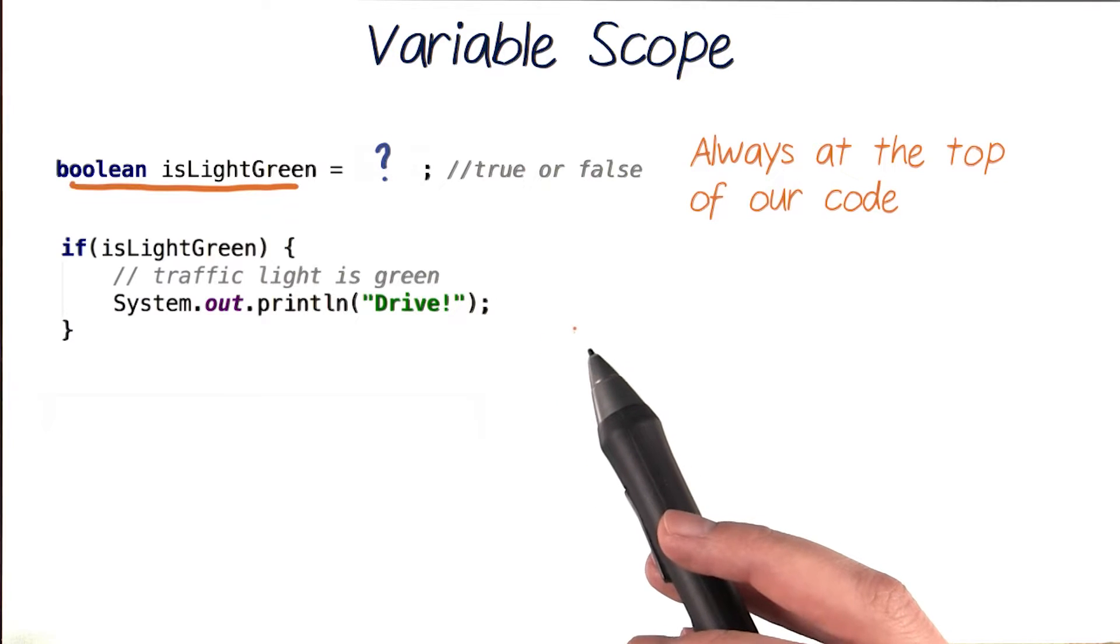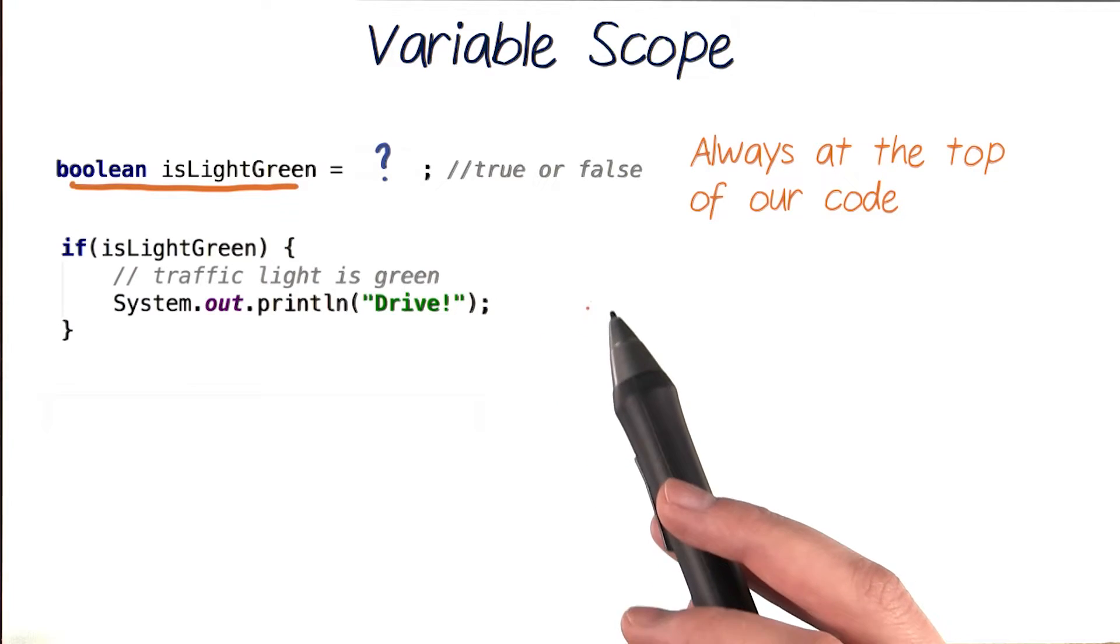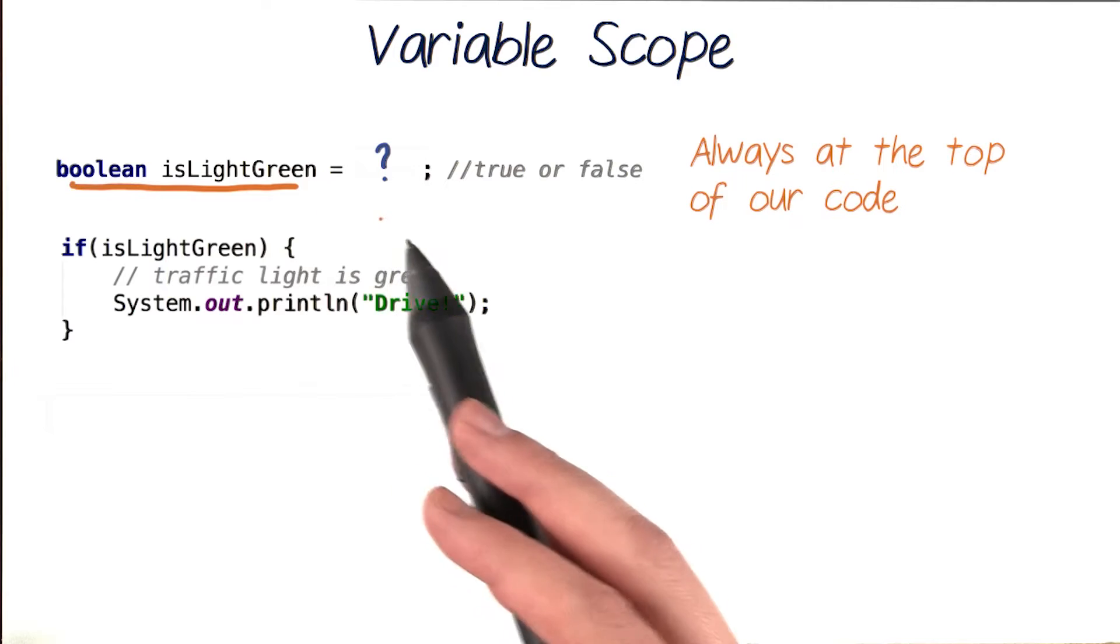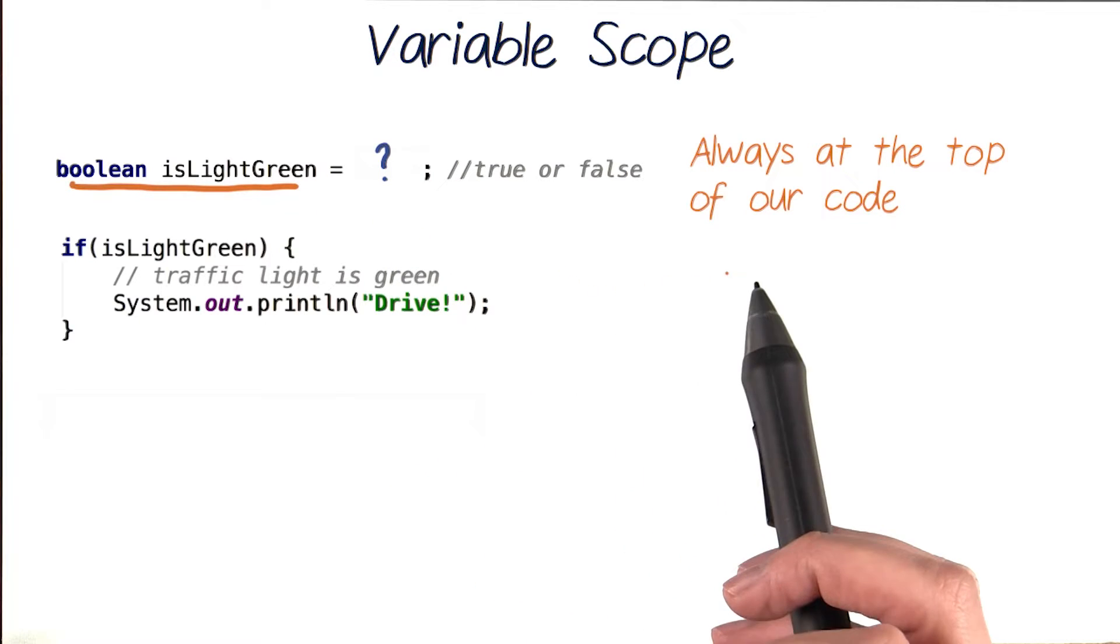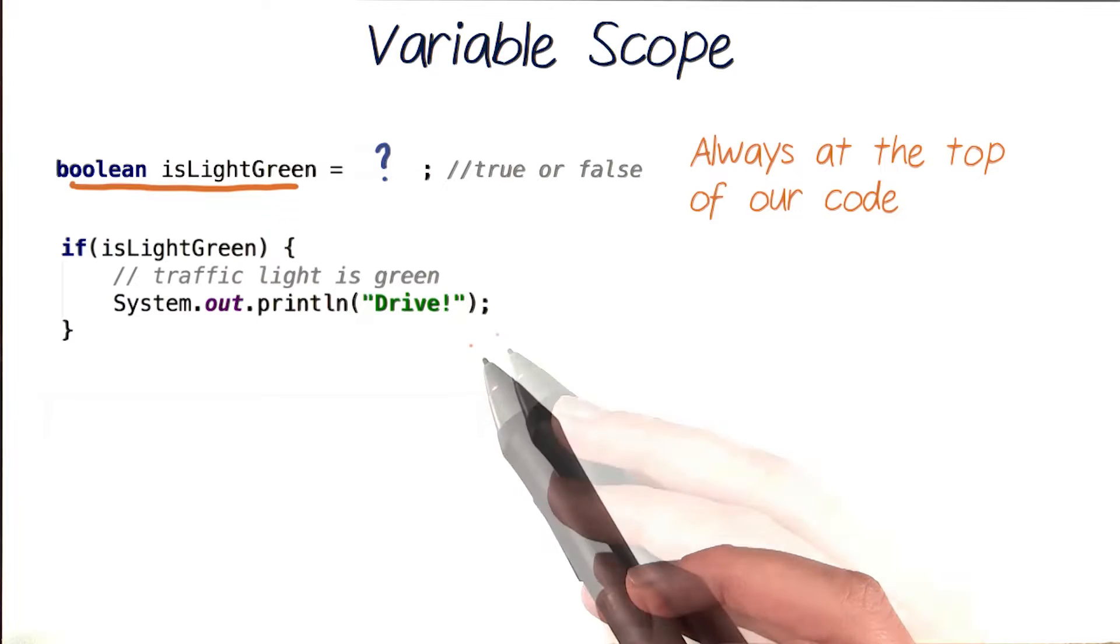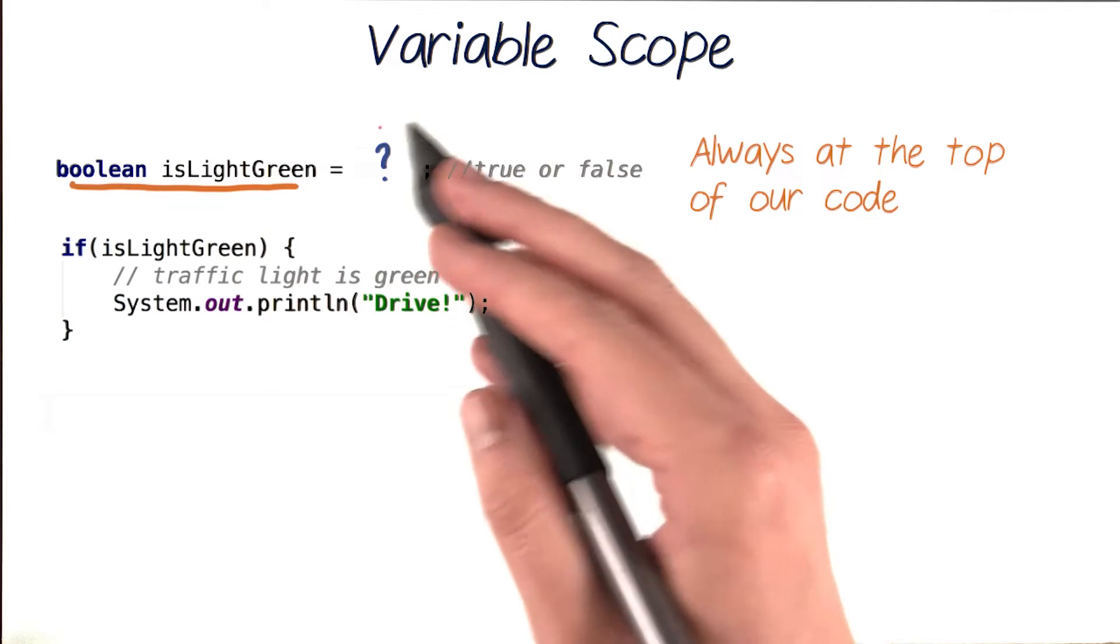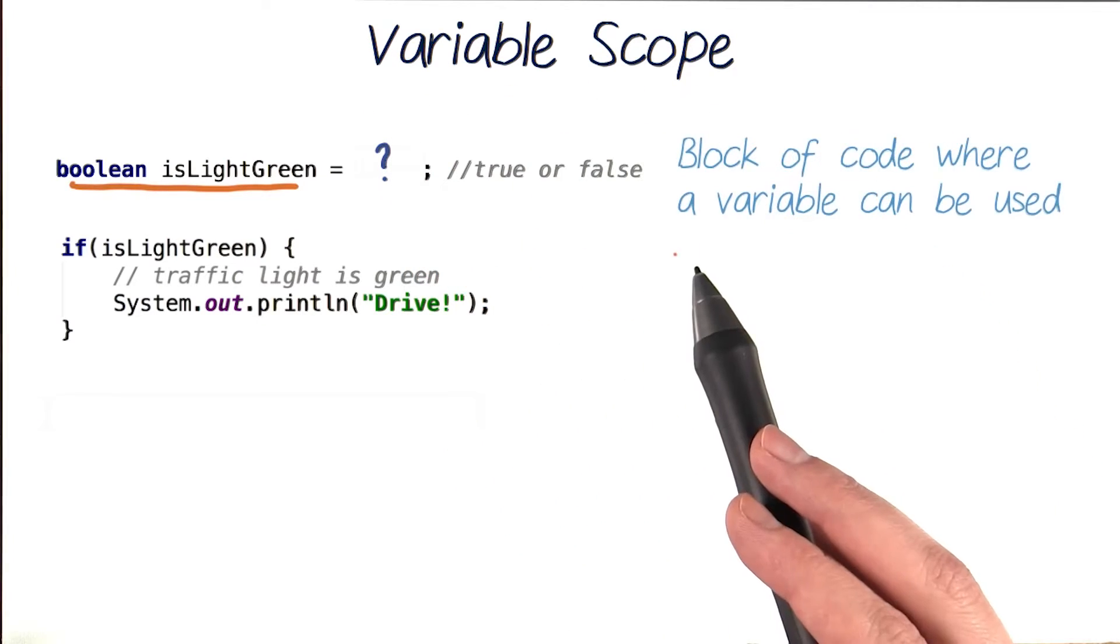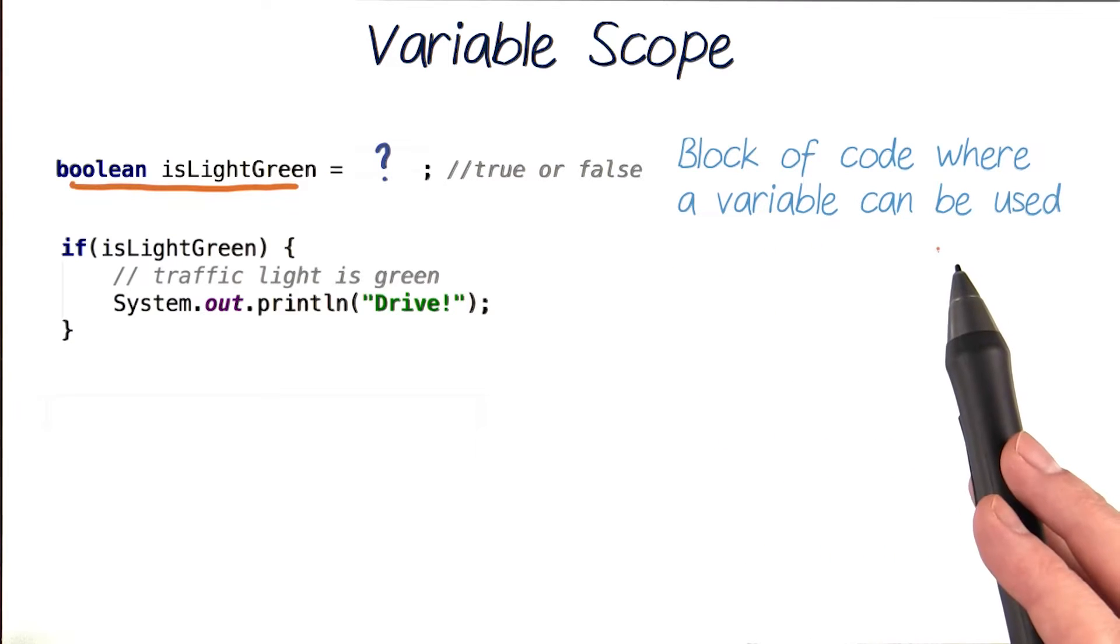One thing you may have noticed in our self-driving car code is that we always declare Boolean variables like isLightGreen at the very top of our code, before and outside of our if statement block of code. This is because of something called variable scope. Variable scope is the block or range of code where a certain variable can be used and referred to.